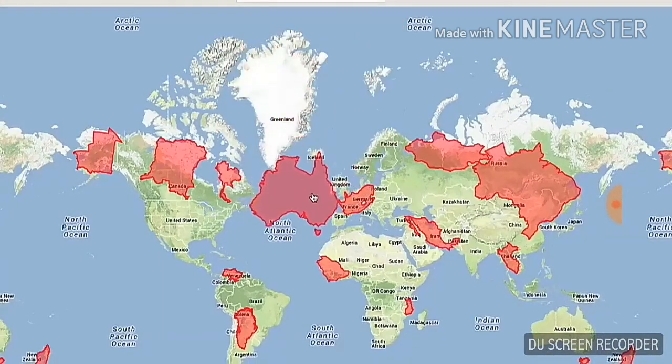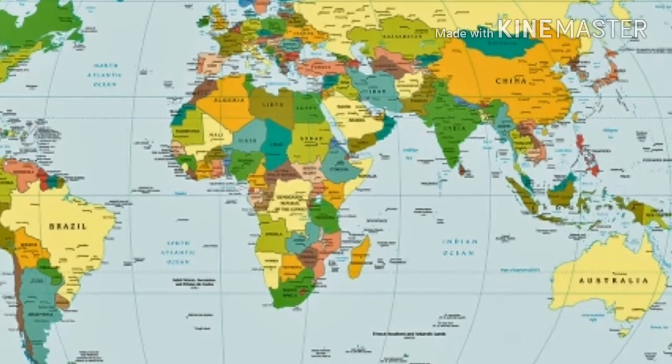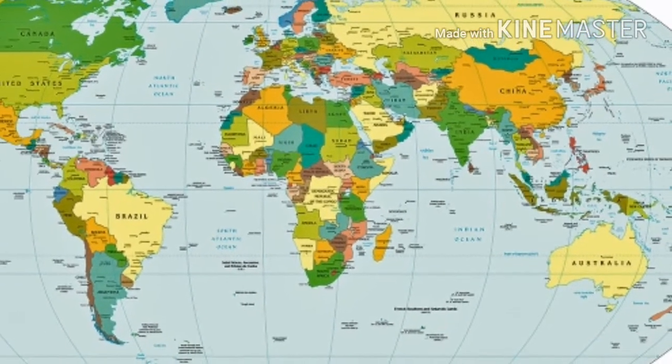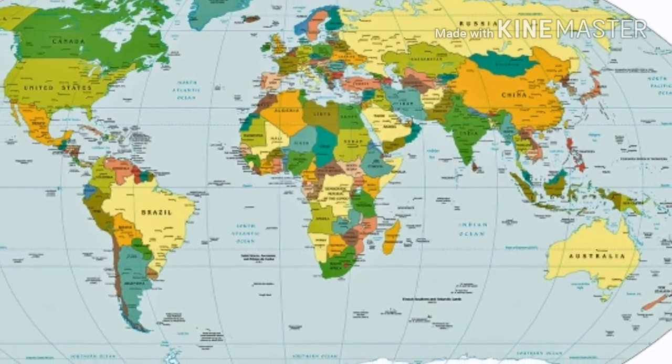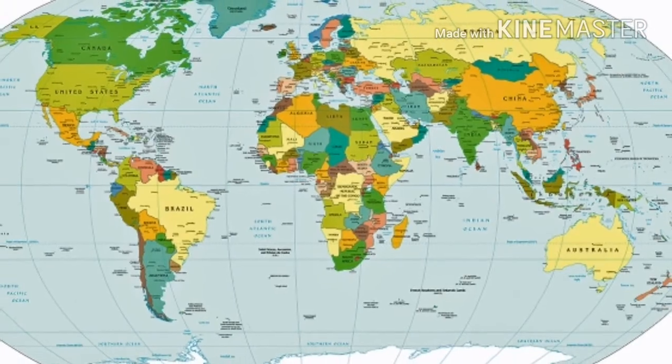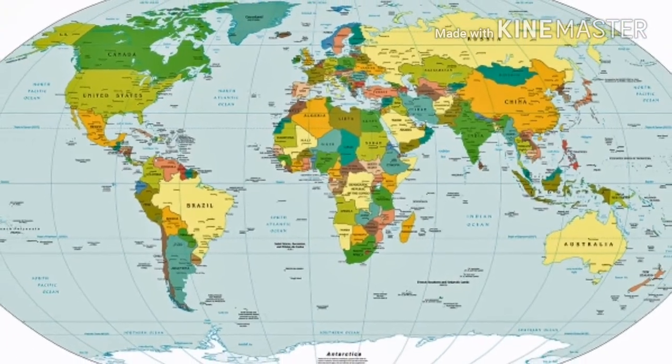To deal with this problem, we can use a 3D globe model or a Mollweide map. If this video made your concept better, please subscribe to Logicaholic.